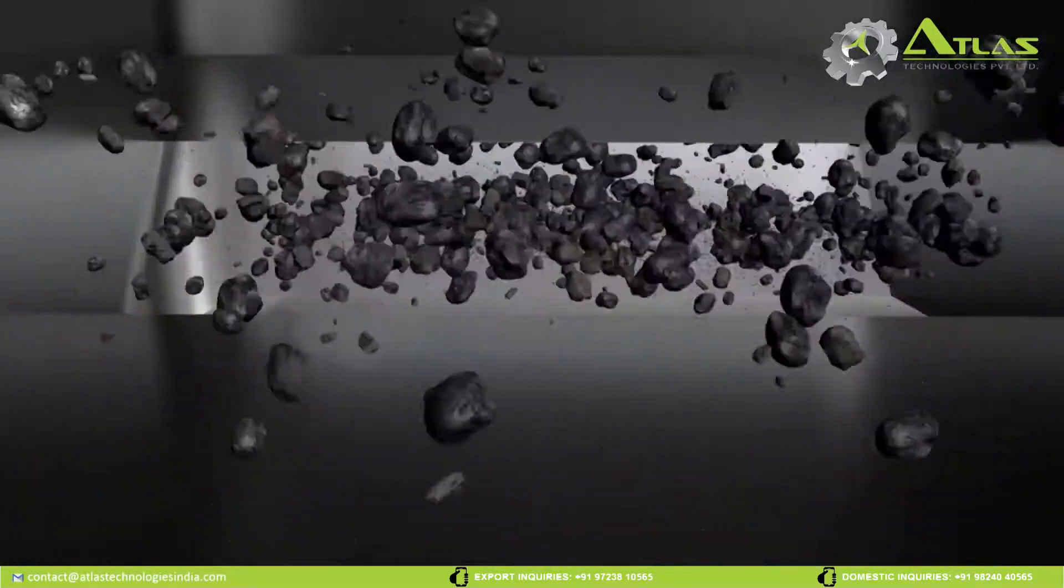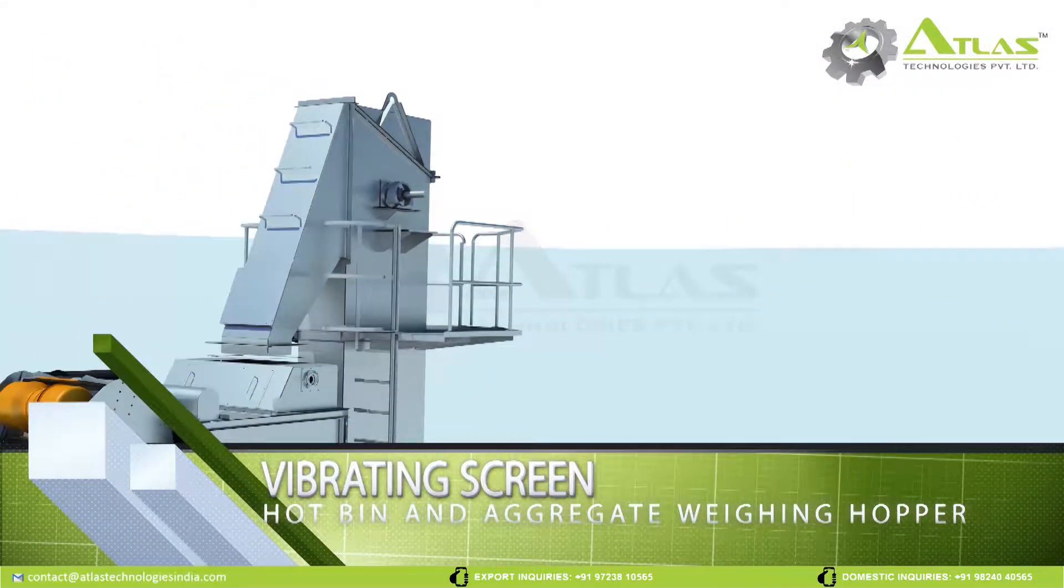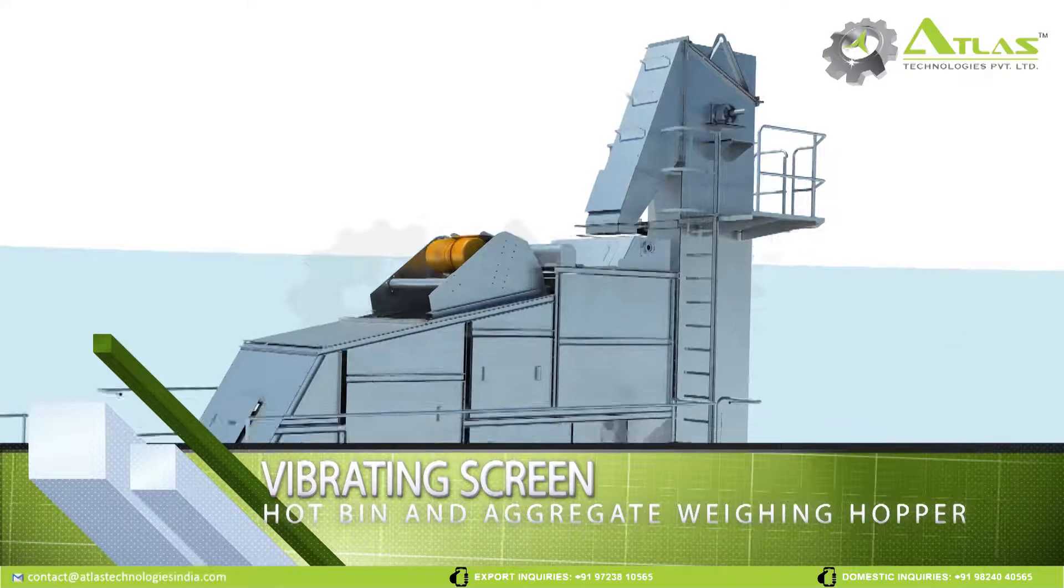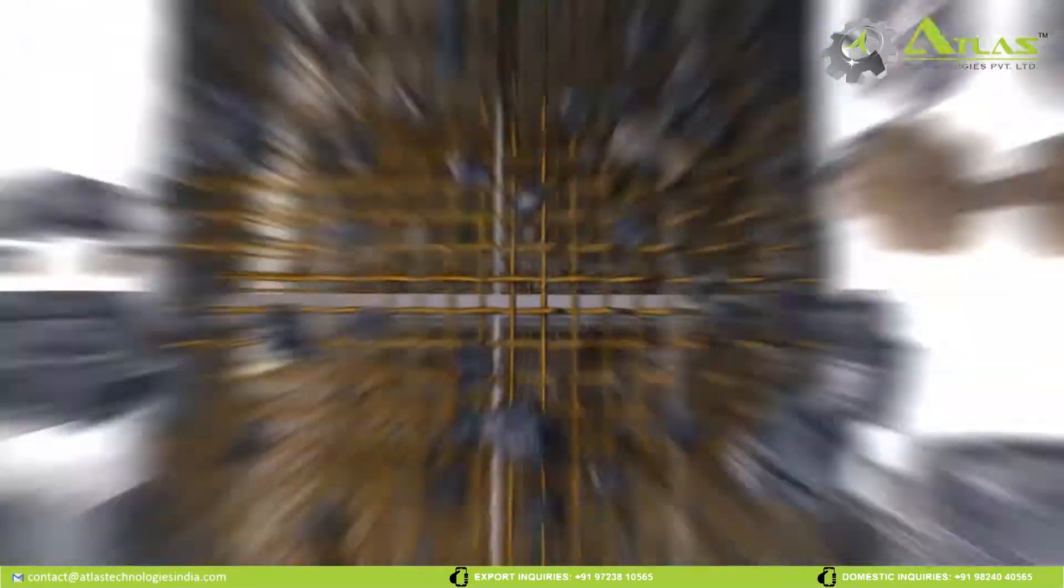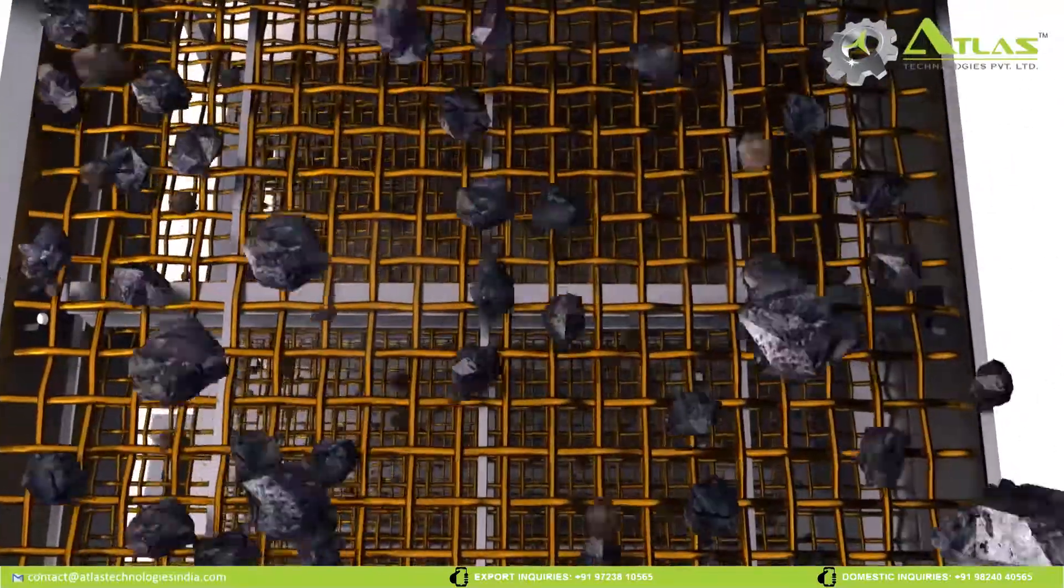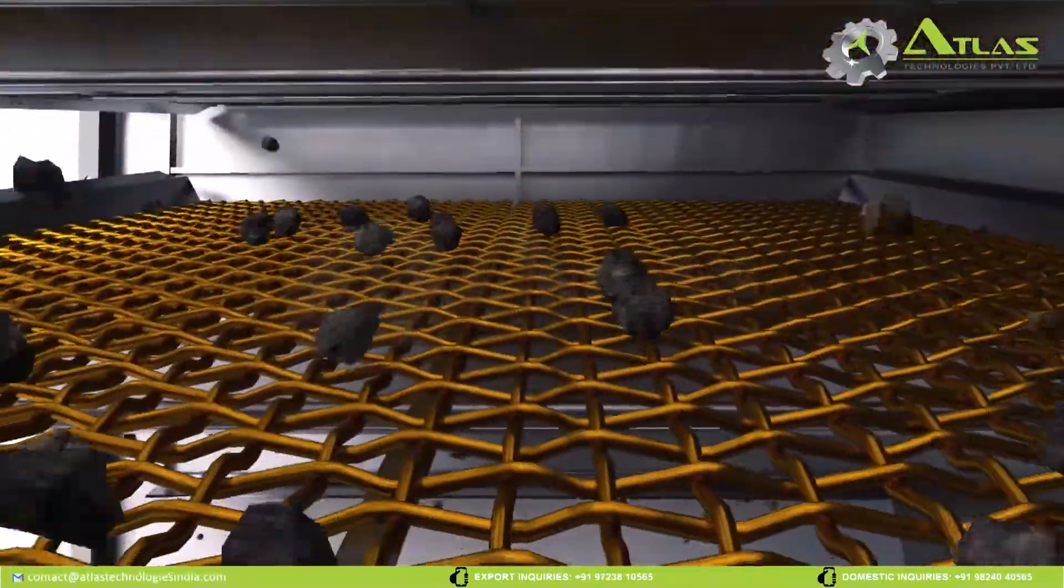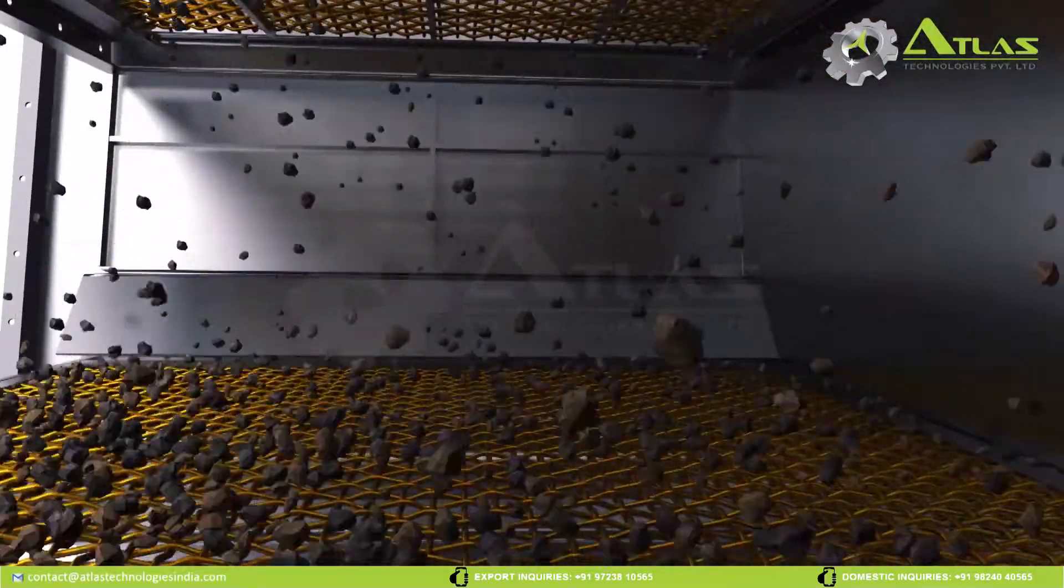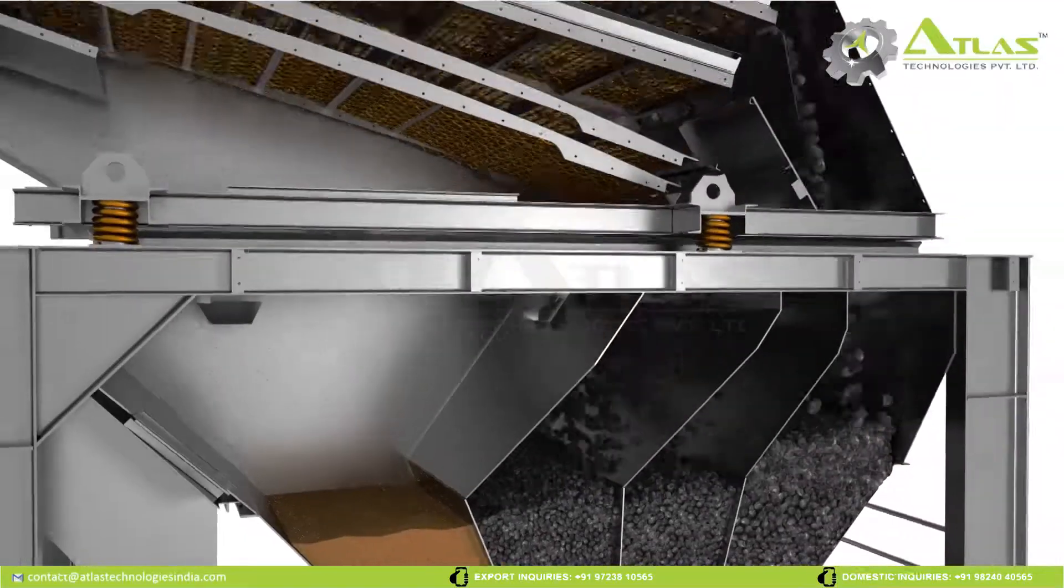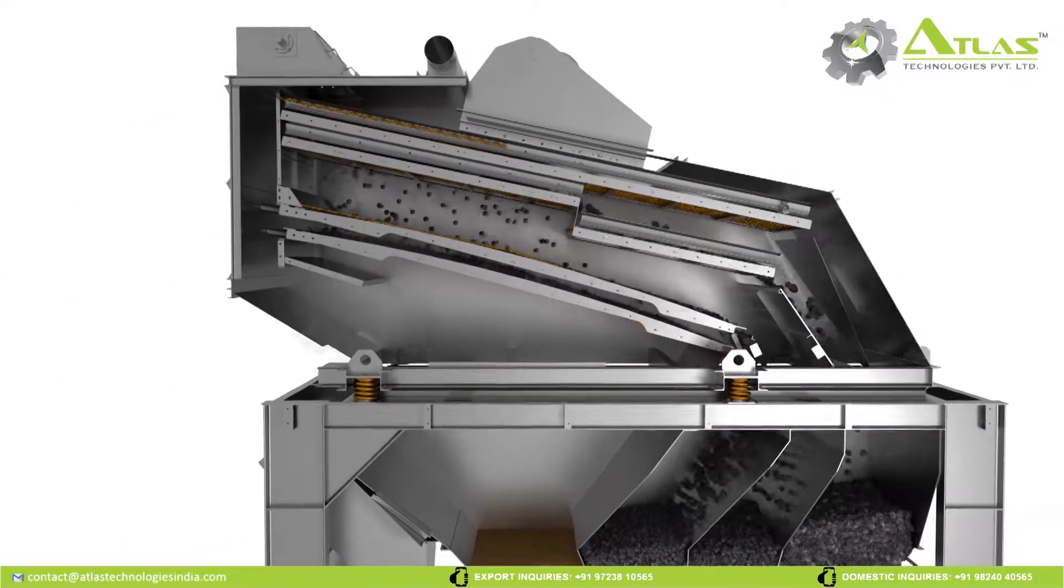Now let's move on to vibrating screen system. Vibrating screen, hotbin and aggregate weighing hopper. Atlas vibrating screen is much easier to maintain. Screen mesh can be replaced easily by push and pull action. Vibrating screen separates the aggregate in different sizes and discharges them to their respective hotbin compartment.